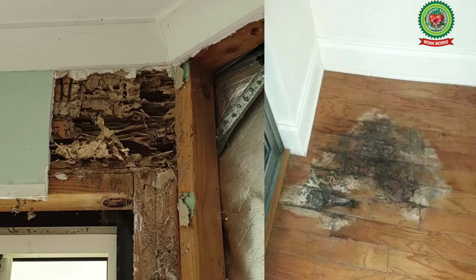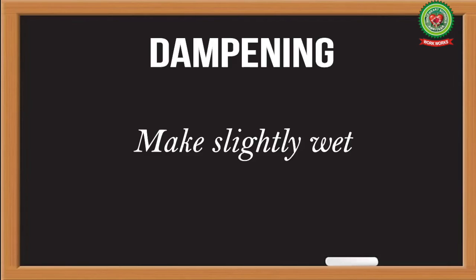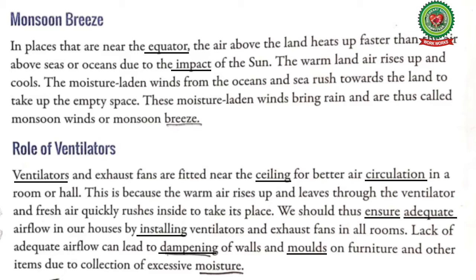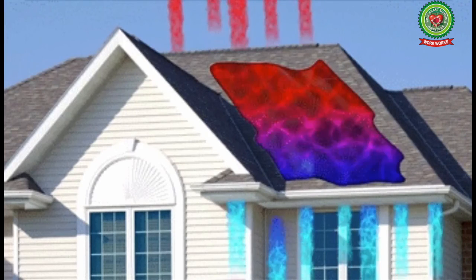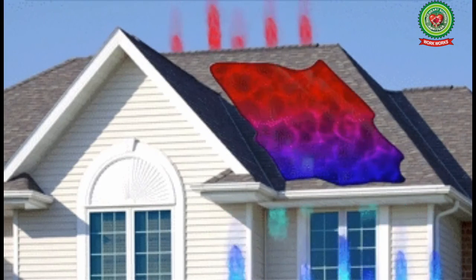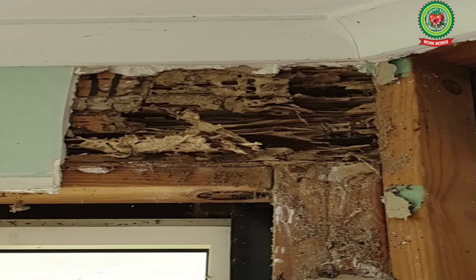Underline the word 'damping' and write its meaning: make slightly wet. Now underline 'molds' and write its meaning: a mold is a fungus that grows on wood. Due to lack of sufficient airflow, damp or wet walls become smelly and cause permanent damage to the plaster or paint, and in most cases mold or fungus grows on wood.